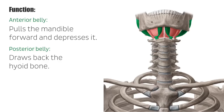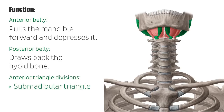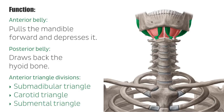The digastric muscle also divides the anterior triangle of the neck into three smaller divisions: the submandibular triangle, the carotid triangle, and the submental triangle.